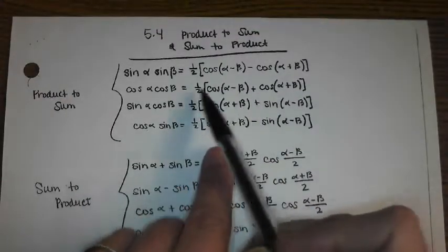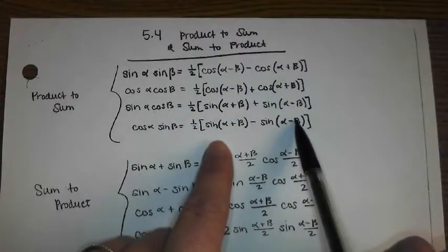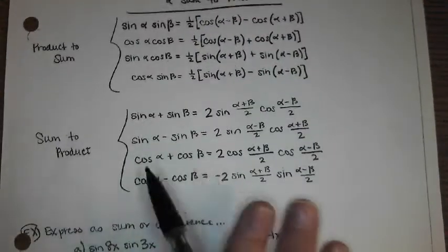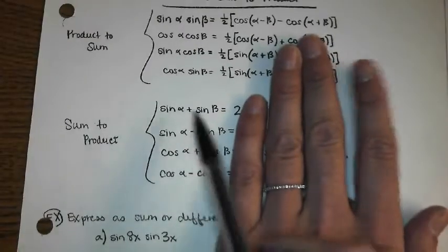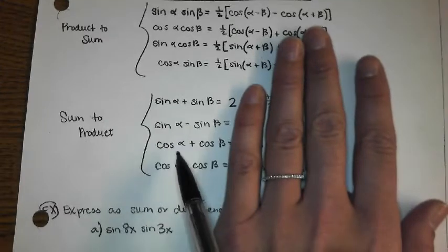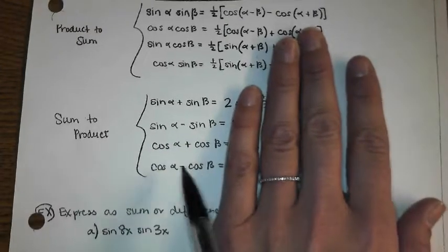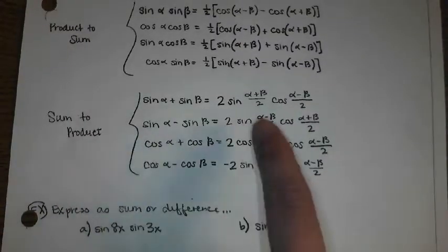So there's product to sum, which is our first section. We have sine times sine, cosine times cosine, sine times cosine, or cosine times sine. So those are all products and then they can be rewritten as sums. And then we have sum to products, which is sine plus sine, sine minus sine, cosine plus cosine, cosine minus cosine, and they can be rewritten as products.